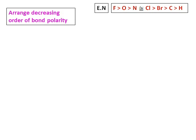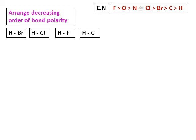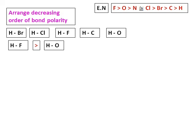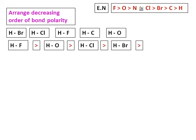Let's do some questions on electronegativity. Arrange the following in decreasing order of bond polarity: HBr, HCl, HF, and HC. The electronegativity series to remember is: F > O > N ≈ Cl > Br > C > H. The farther apart two elements are in this series, the greater the difference in electronegativity and the more polar the bond. HF has the greatest polarity, followed by HCl, then HBr, and HC is the least polar.